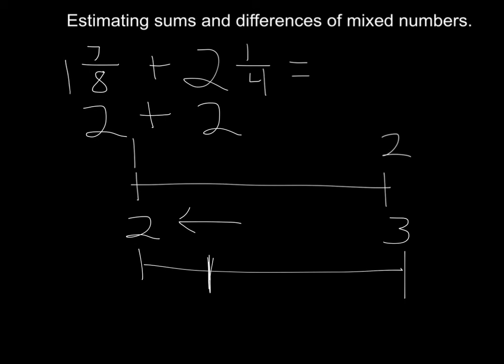So then 2 plus 2 equals 4. So if we're estimating 1 and 7/8 plus 2 and 1/4, I'm going to say it's about 4.